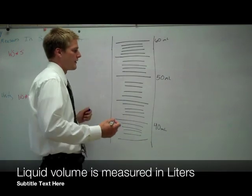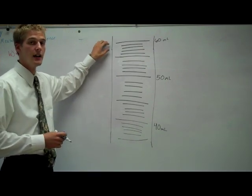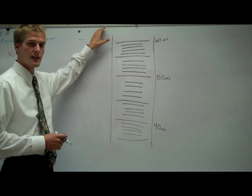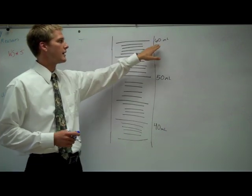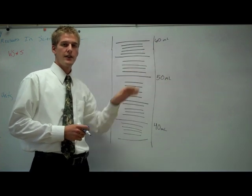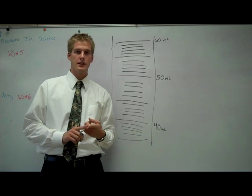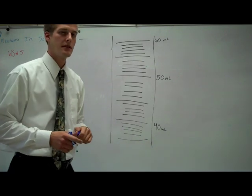So, if I have a graduated cylinder, the most it can hold is the top line that it says. Usually there's space above it so that nothing spills out. But today, our maximum volume is 60 milliliters. And in volume, we use liters for liquid volume. The most common unit we're going to use is the milliliter. That's the smallest unit we're going to use.